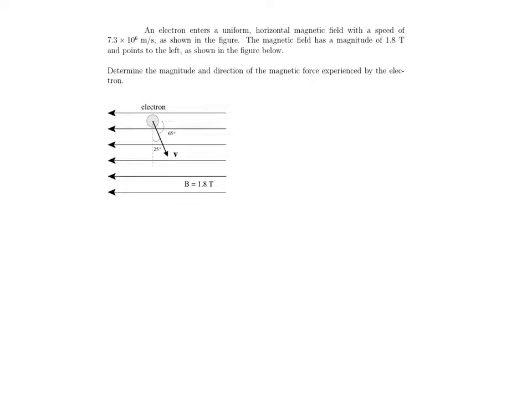The force on a moving charged particle in a magnetic field can be written as the magnetic force is equal to QV cross B, where Q is the charge of the particle, V is a vector pointing in the direction of the velocity of the particle, and B is the magnetic field.